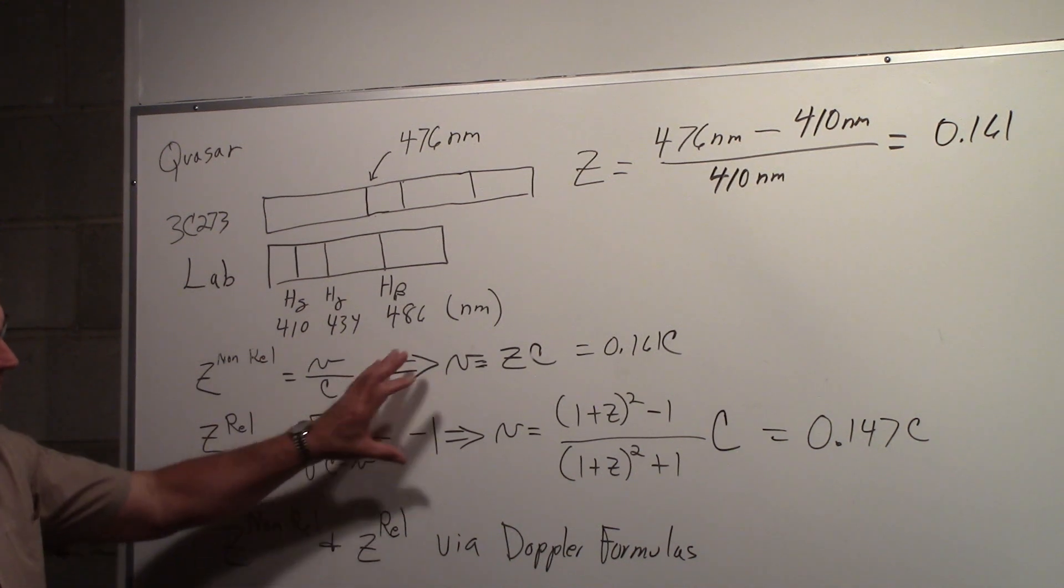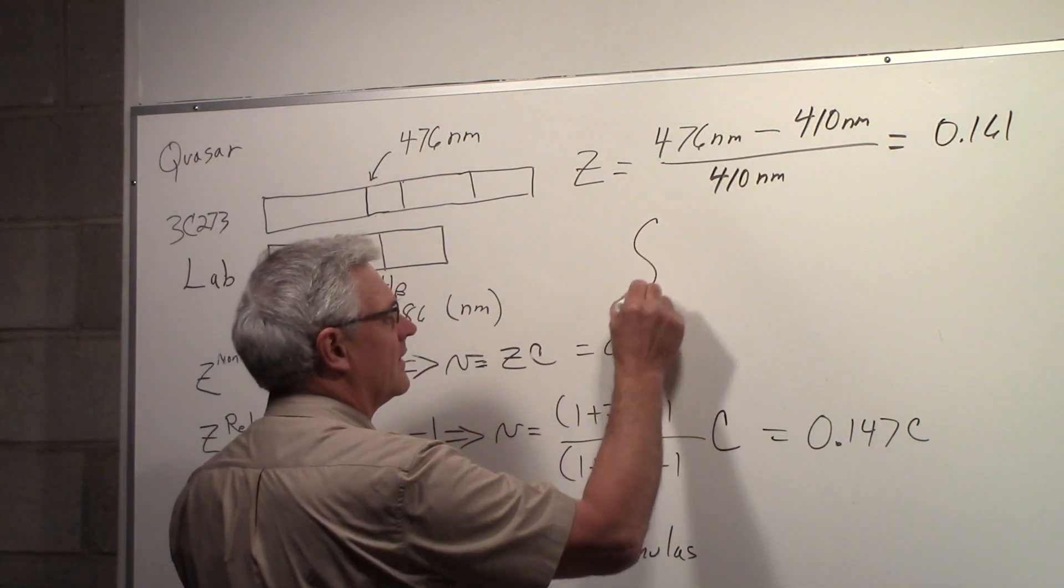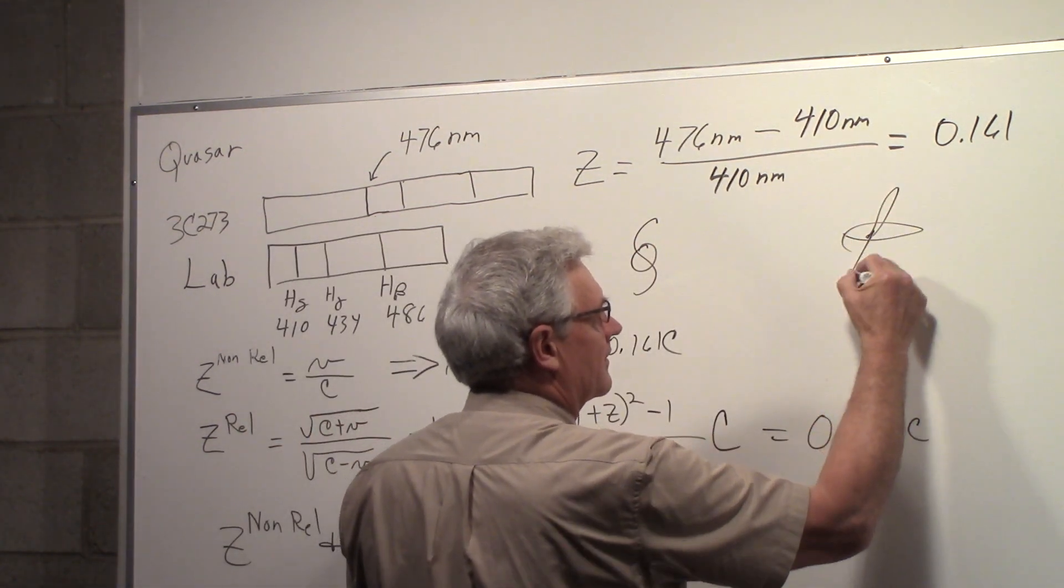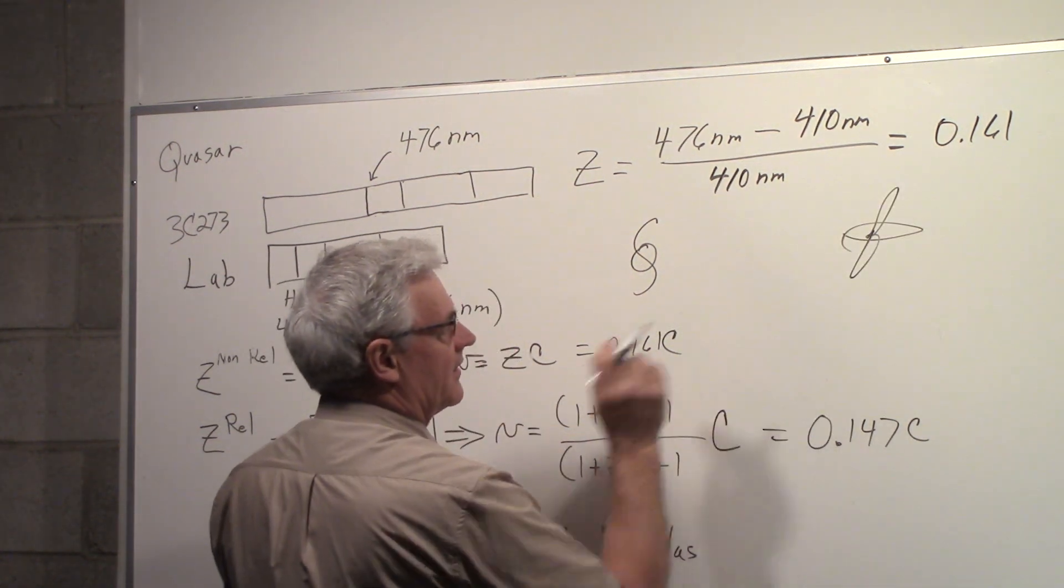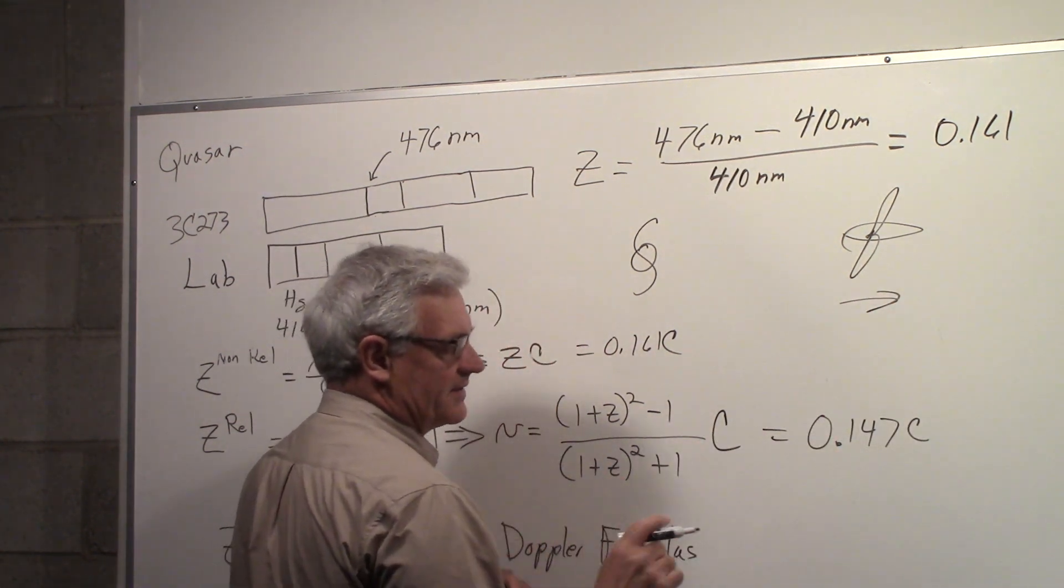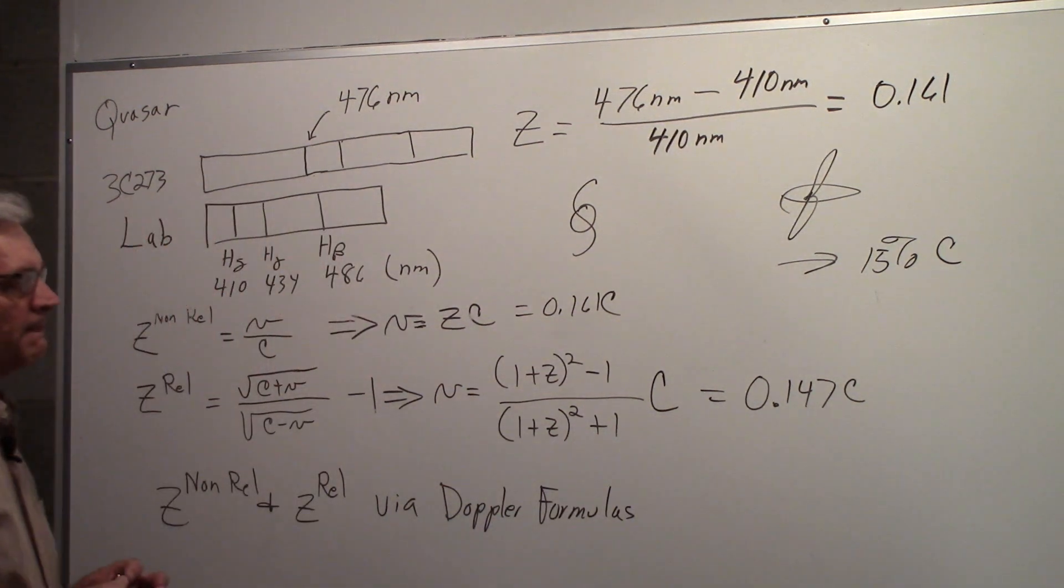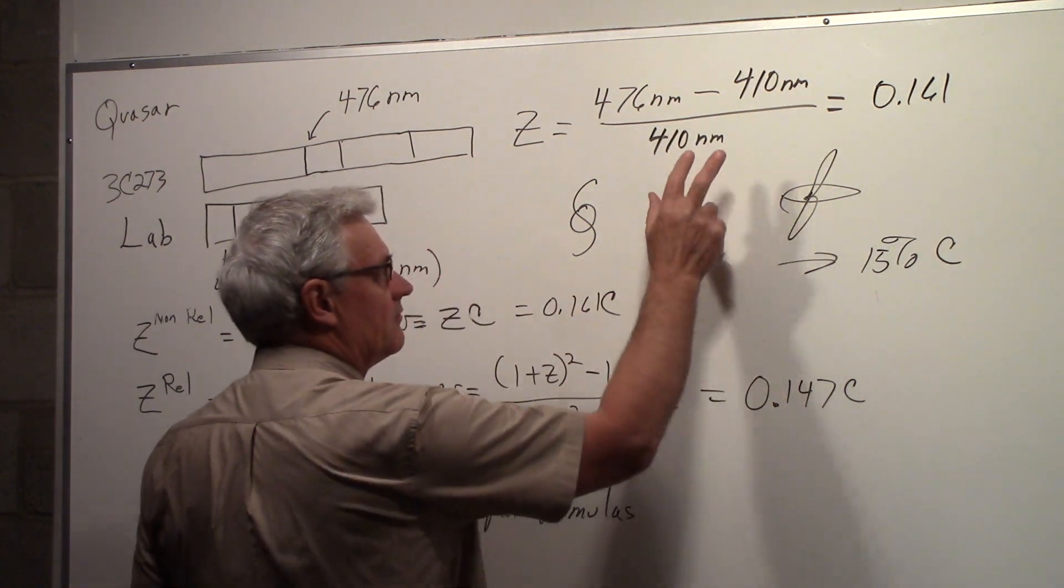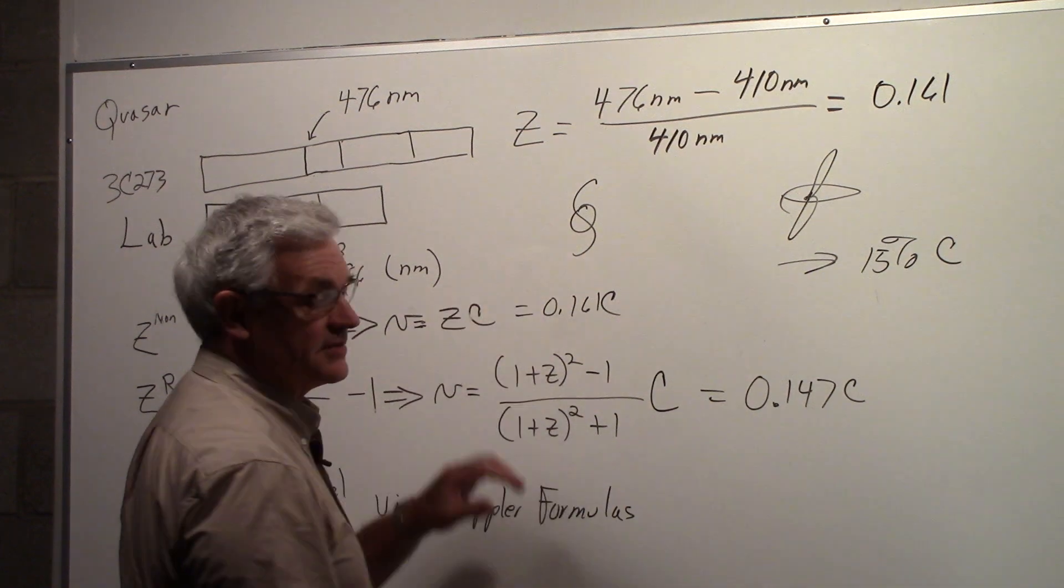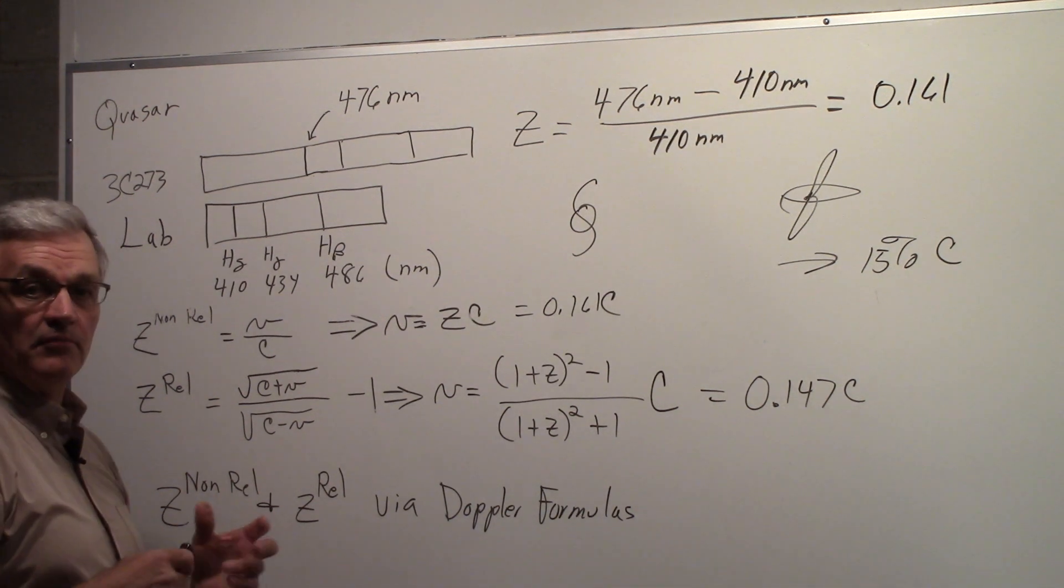So in order to actually determine the—so this is not a correct way to determine the recession velocity of the quasar. So here we are in our galaxy. We're looking at this quasar object out here. We see a z value, and by using these formulas, we would say that that galaxy is moving away from us at roughly say 15% the speed of light. But we're using Doppler formula which doesn't apply to this situation because the redshift that we see is caused by the space between us and the quasar expanding. In order to get the recession velocity correctly, you have to have a model of the universe.